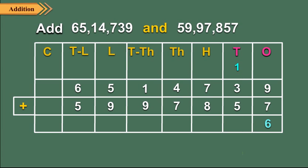Step 3: Add the digits at the tens place. 1 ten carried forward, plus 3 tens plus 5 tens is equal to 9 tens. So we write 9 in the tens column.